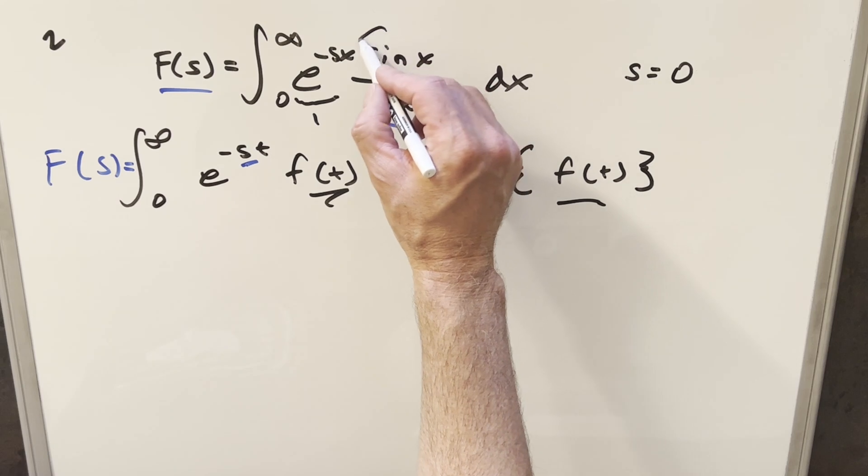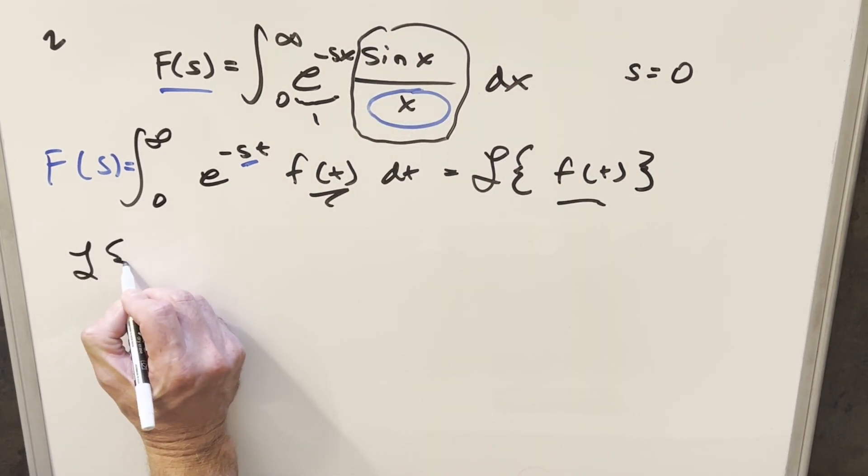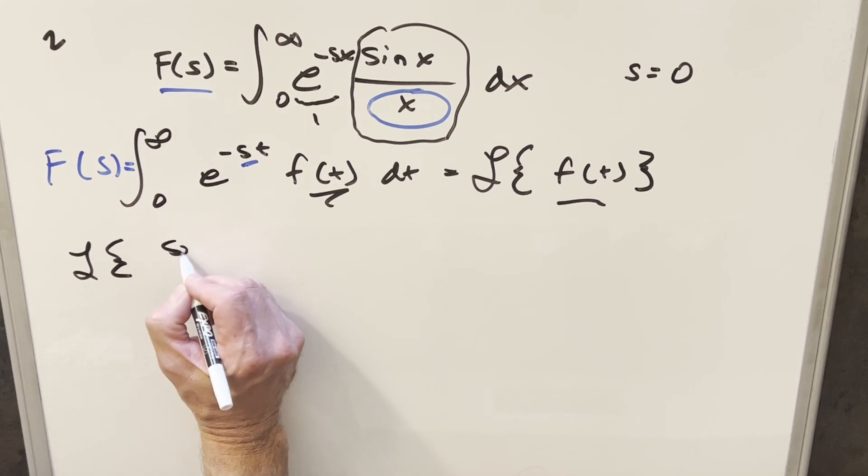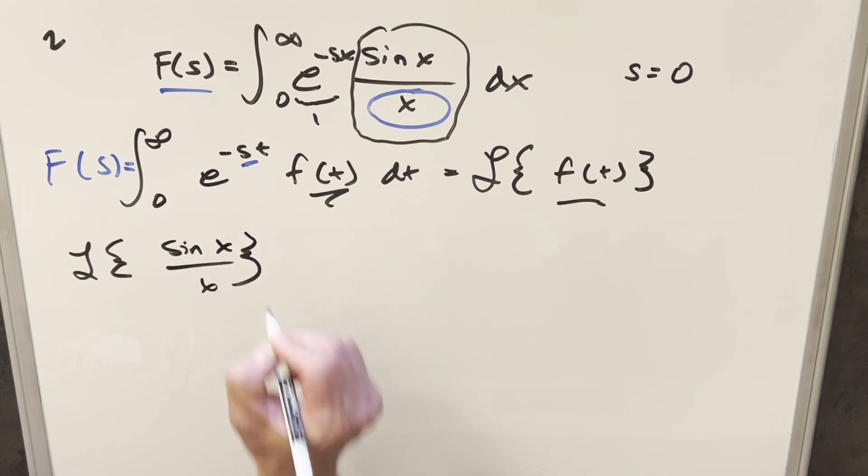And so in terms of our problem, the f of t value here, it's going to be all of this part here. And so what we're going to be looking for here, this is just going to be the Laplace transform of our f of t, or in this case, f of x, which is going to be just sine x over x.